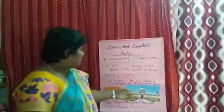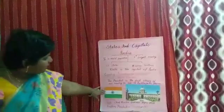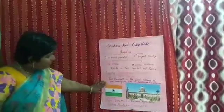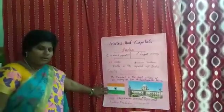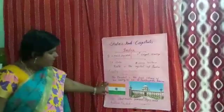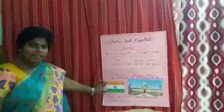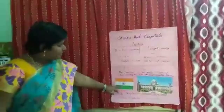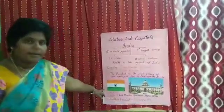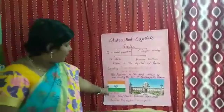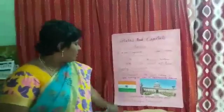And this is our national flag. You all know, this contains three colours — orange, white in the middle, and green.